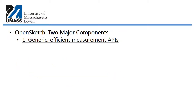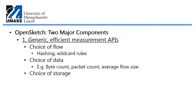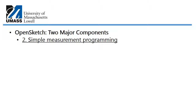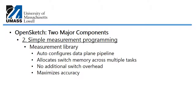OpenSketch is comprised of two major components. The first is providing generic, efficient measurement APIs, which offer a choice of flow selected via hashing and wildcard rules, a choice of data such as byte count, packet count, or average flow size, and a choice of compact data store structures. In terms of efficiency, it operates at high link speed even with limited memory. The second component is simple measurement programming — the measurement library automatically configures the data plane pipeline, allocates switch memory across multiple tasks, requires no additional switch overhead, and maximizes accuracy.